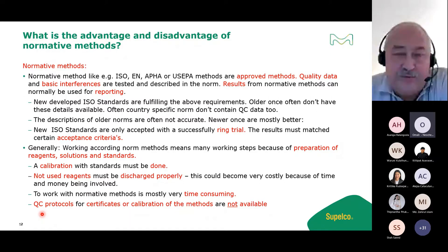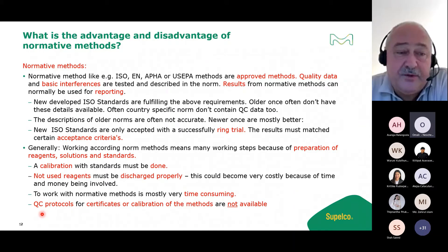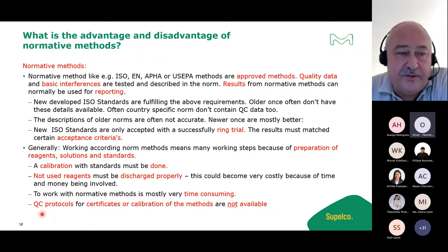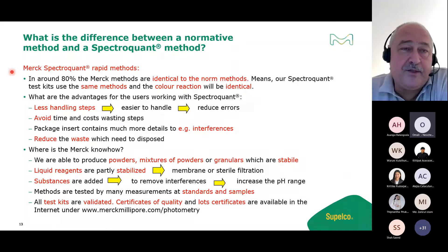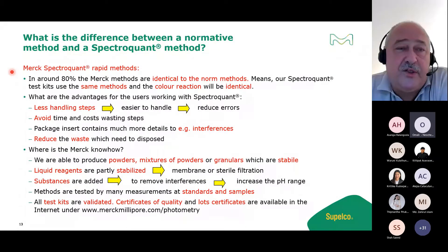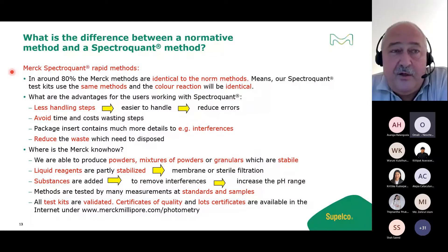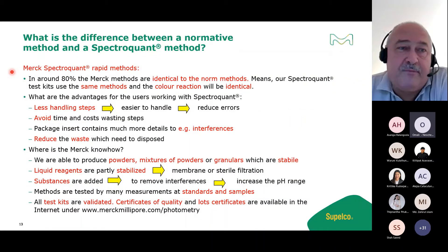The entire QC protocol - certificates and calibration records - is the full responsibility of the laboratory. If an auditor asks to see your calibration, you must be able to show it. If someone working with the method is not qualified or certified for it, they cannot use it. This is the complete procedure established to assure the quality of results.